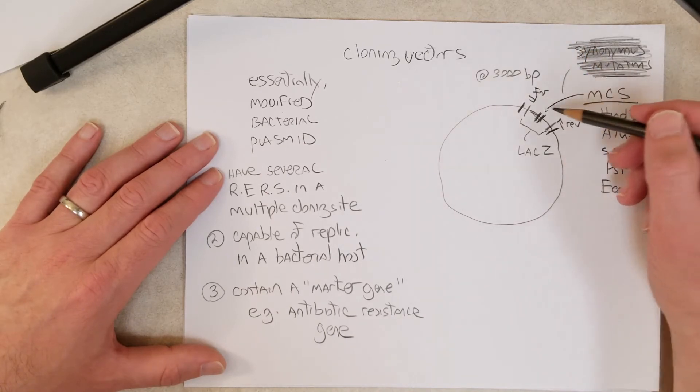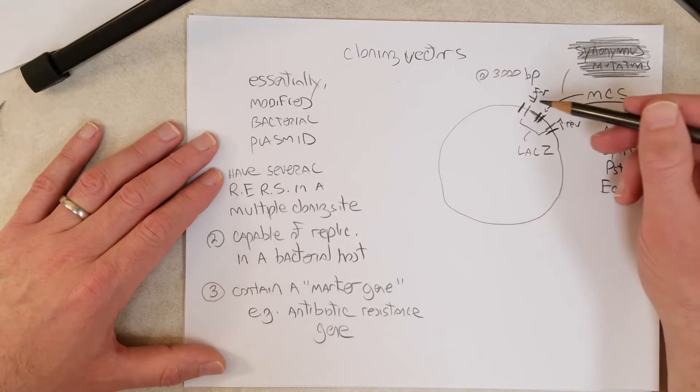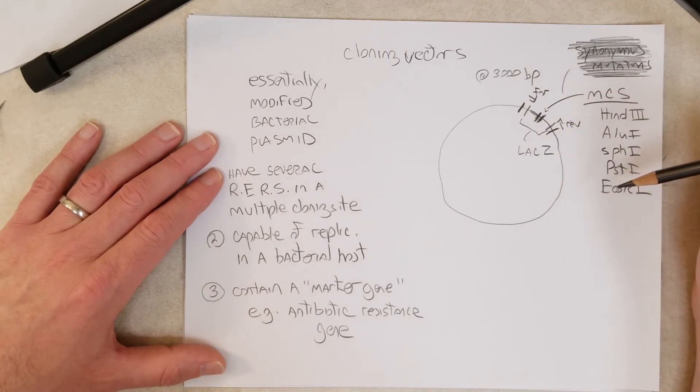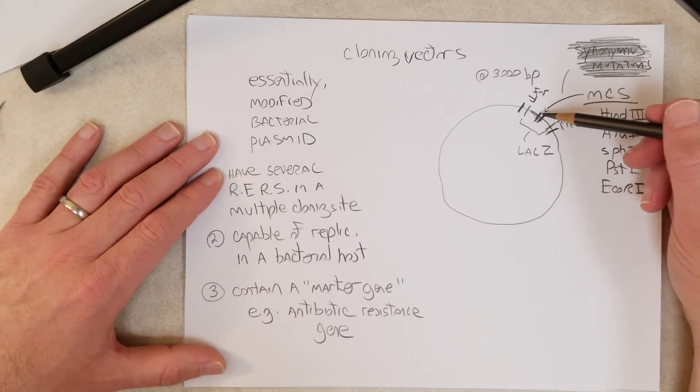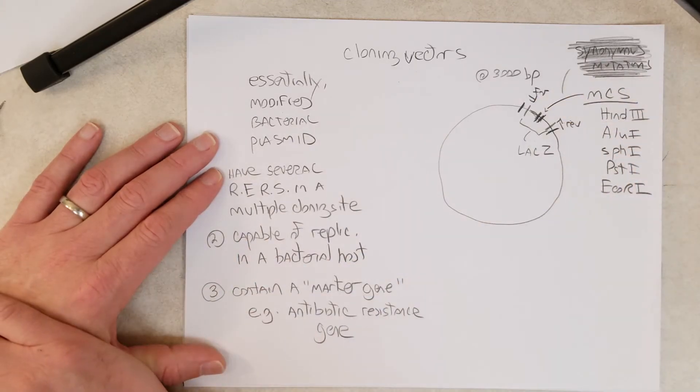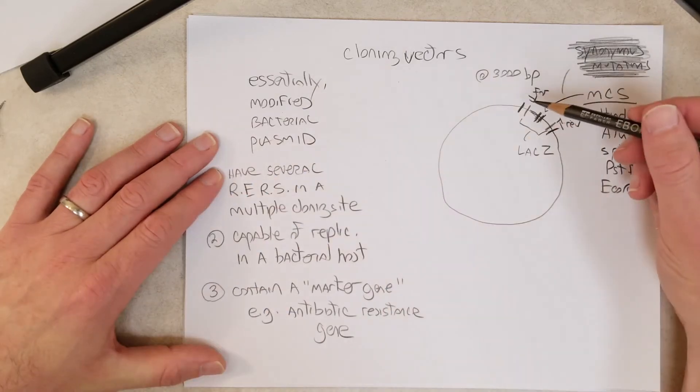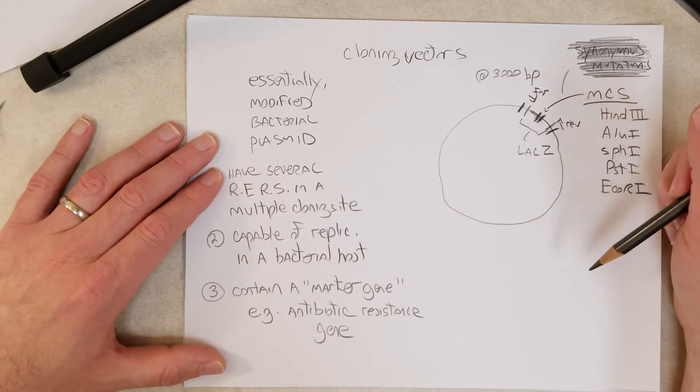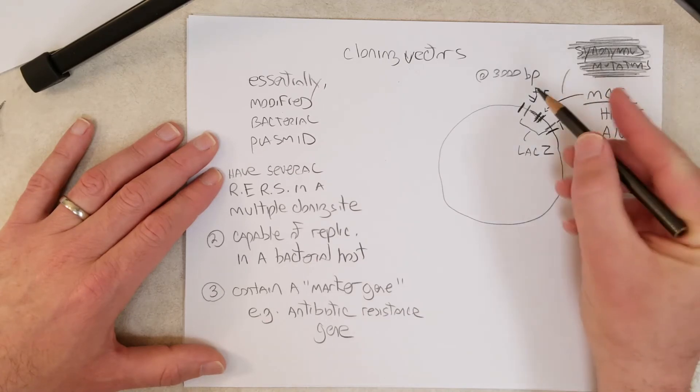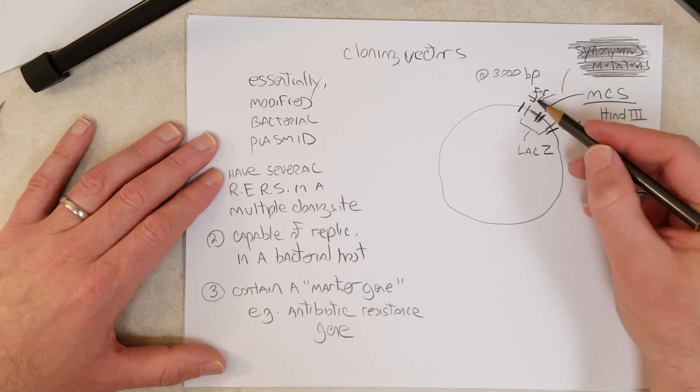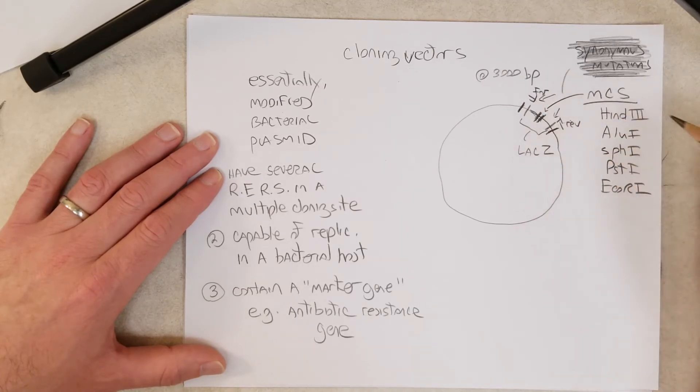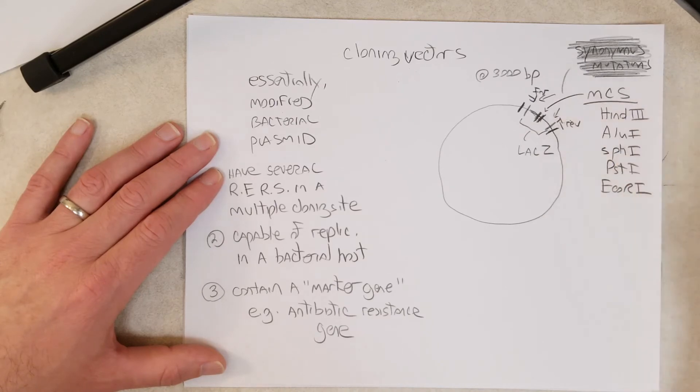Also, you can use just one of these primers in a sequencing reaction by Sanger sequencing, which we also just saw recently in a lecture, to determine the sequence of the molecule you put inside the plasmid. Remember, with Sanger sequencing, you would only want to use one of these primers. But you could do two sequencing reactions, and you could sequence this end of whatever you put in the multiple cloning site with the forward primer, and this end with the reverse primer.